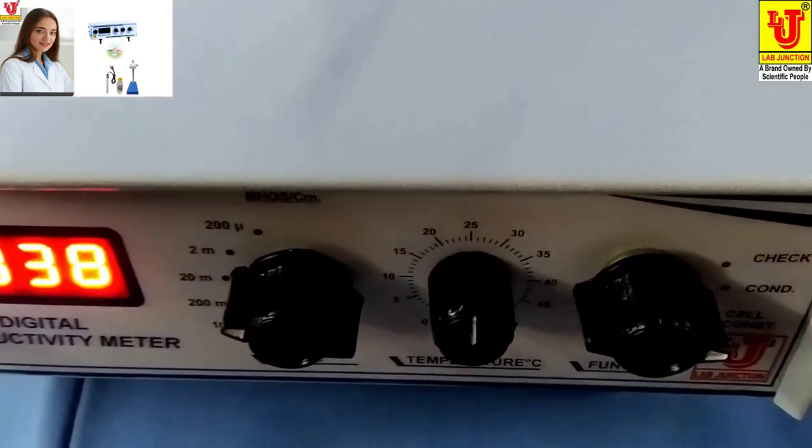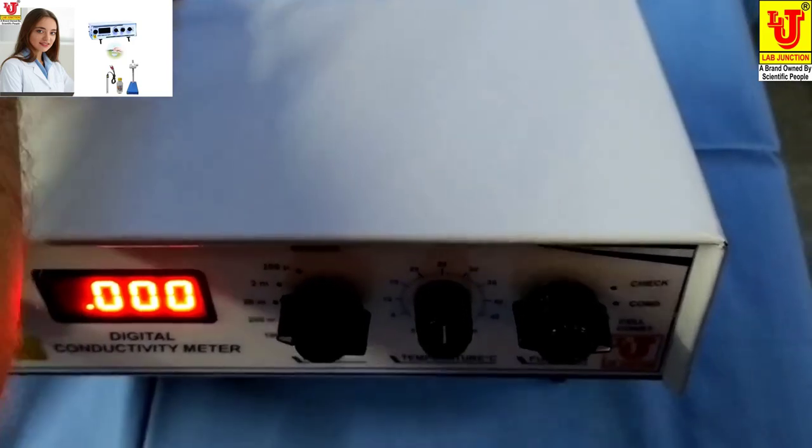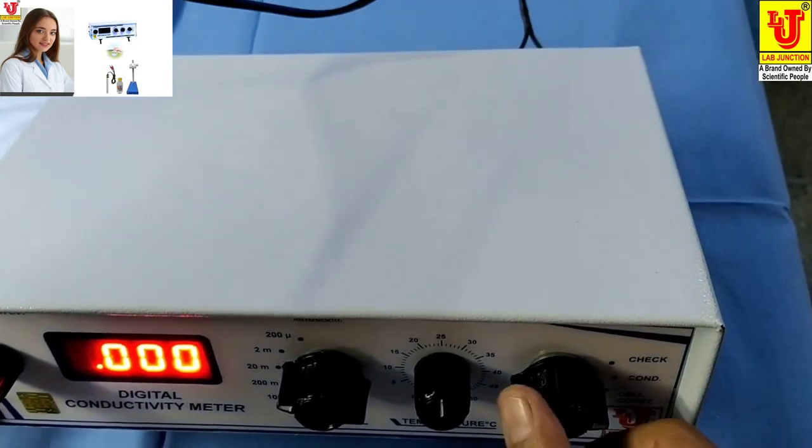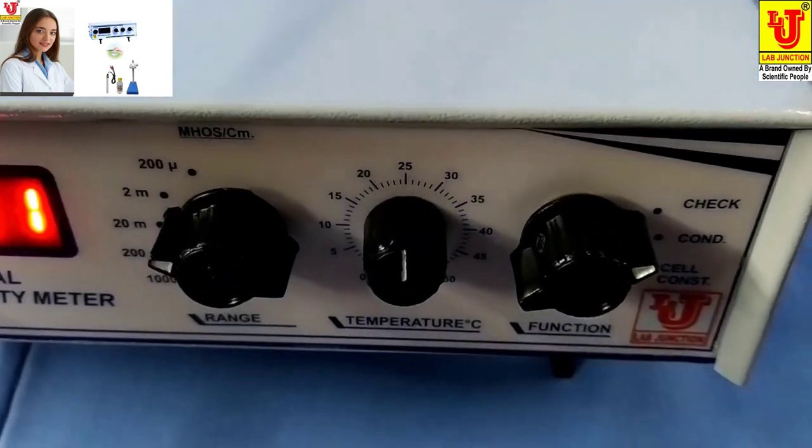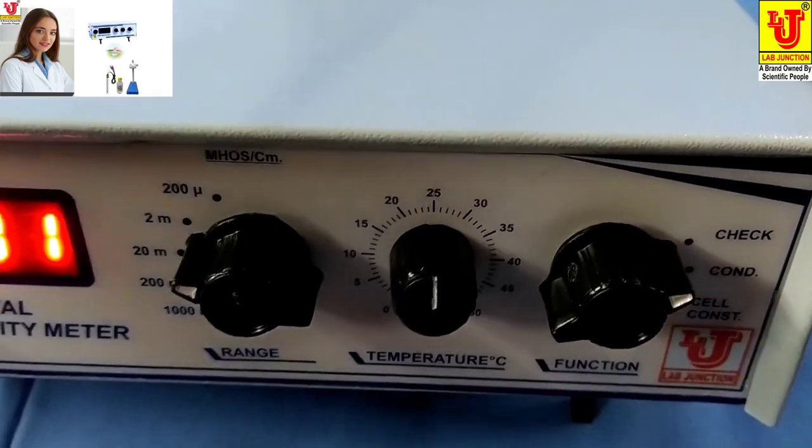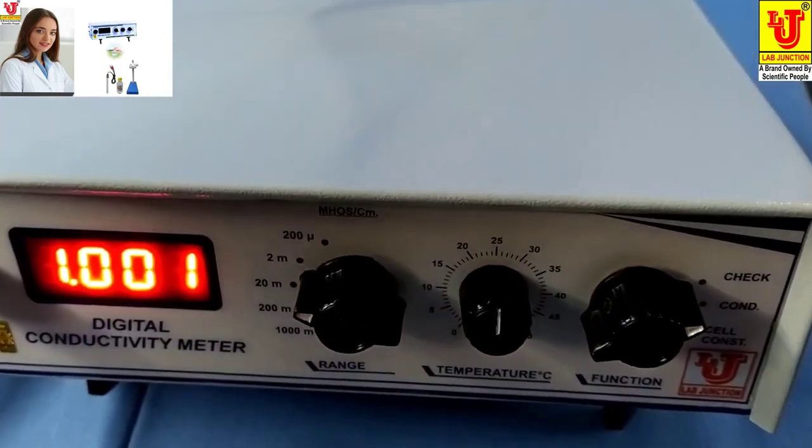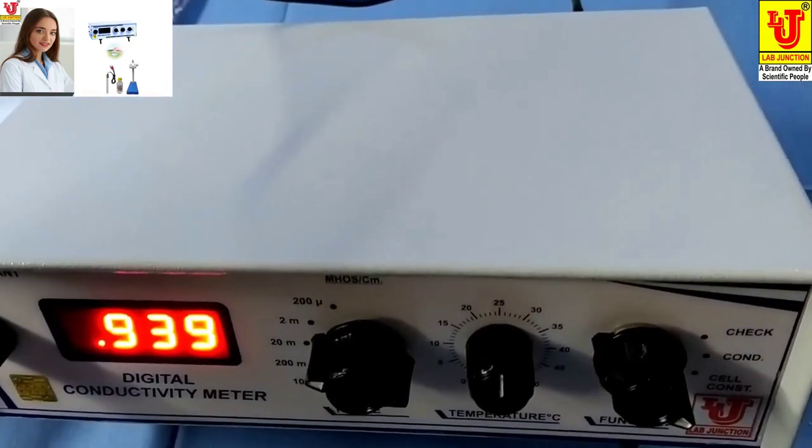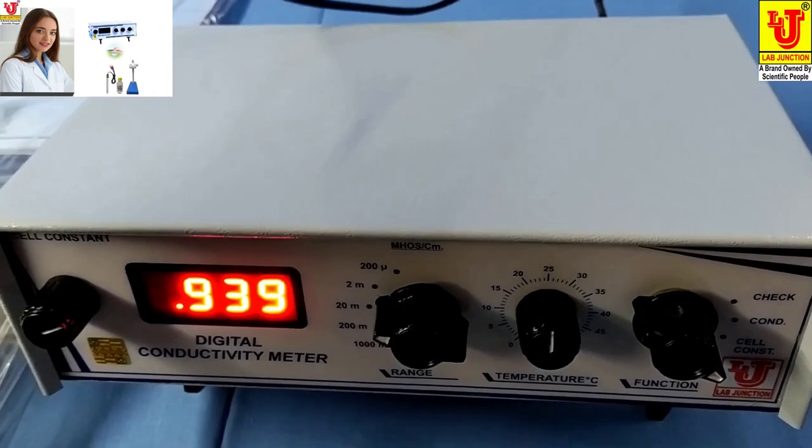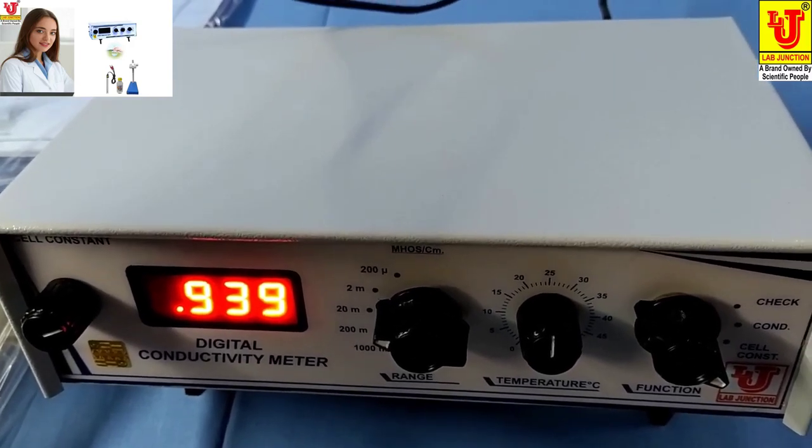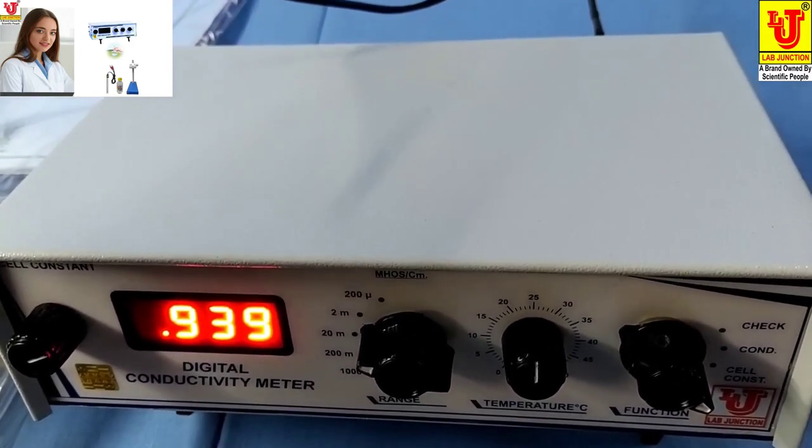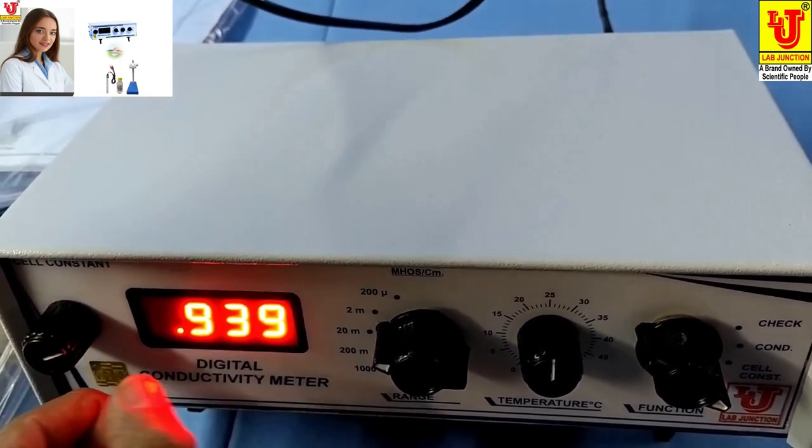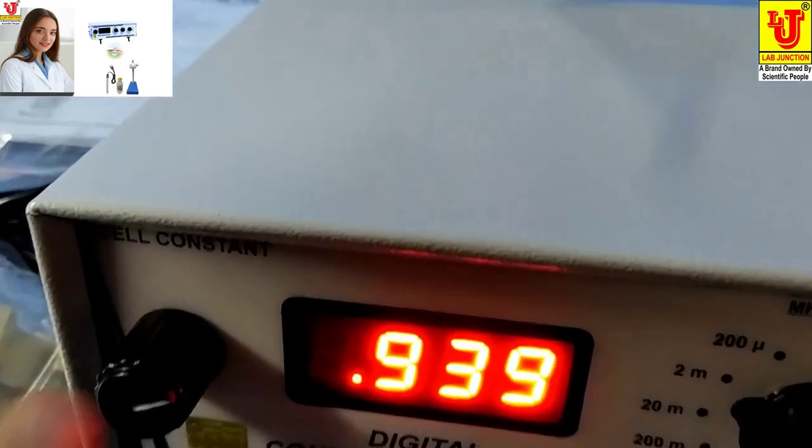You can again switch on the machine like this way. You check your position that is 1.000. Now you directly go to cell constant. You have noted 0.939 on your notebook. Then insert same value with the help of cell constant knob, 0.939 from cell constant knob.